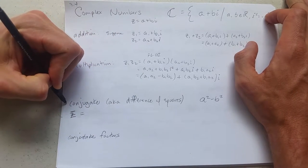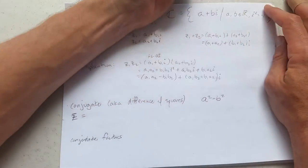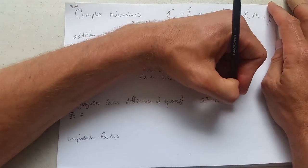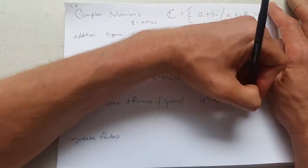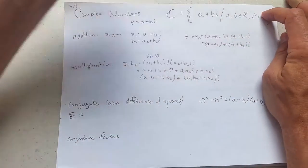Now for conjugates. We saw a squared minus b squared is known as the difference of squares. It has a conjugate factoring. So what is a conjugate?